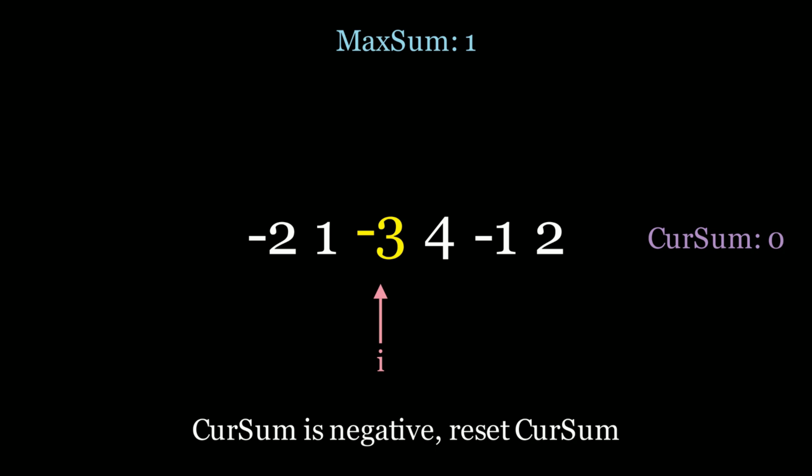It doesn't make sense to start your subarray with those values because you're always going to end up with a negative sum, which will lower your sum of a subarray. We're only looking for positive values.